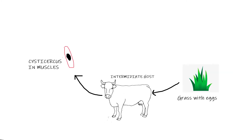Now the parasite has to get to the muscles and penetrate them. There it becomes a cysticercus and it has to wait.